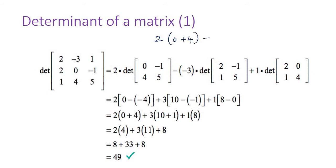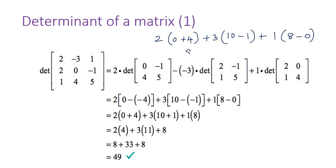Then there is a minus — the second element already has a minus, so minus into minus gives plus 3. Then: 2 into 5 is 10, minus 1 into 1 is 1, plus 1. Then 2 into 4 is 8, minus 1 into 0 is 0. So 4 into 2 is 8, plus 10 minus 1 is 9, and 9 into 3.